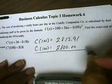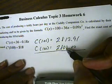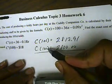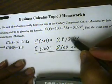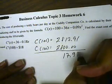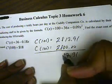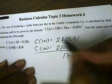So, the exact cost to make the 101st teddy bear. Remember, it cost us $2,800 to make 100. When we make the 101st, the cost is now $2,817.91. So that means it went up by $17.91 in order to make that 101st teddy bear.